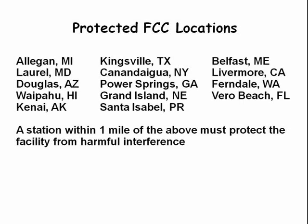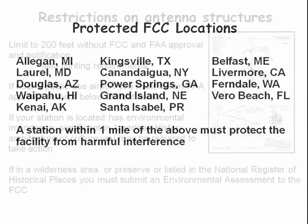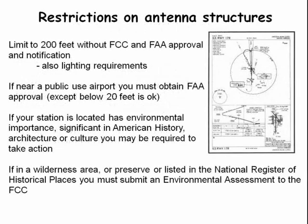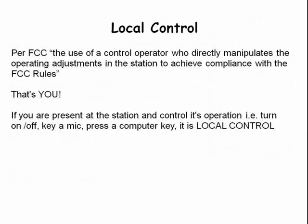You may not operate within one mile of the sites listed here in order to protect that site from harmful radiation. There are certain locations where there are restrictions on erecting antenna structures. This includes public use airports, locations of environmental importance, wilderness areas or preserves, etc.